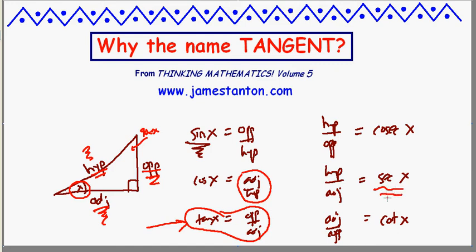And then these ones, secant, that means something in geometry too. A line that cuts through a circle. Cosecant, I'm guessing, would be a companion to that line. And cotangent, I guess, is a companion to tangent.